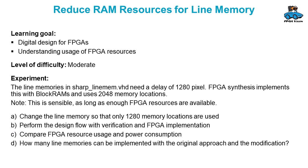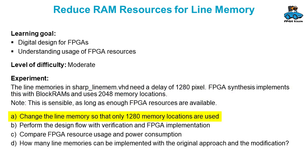An experiment for digital design and understanding of the FPGA resources is having a look at the line memories. The line memories need a delay of 1280 pixels, and the FPGA uses block RAM with 2048 memory locations for it. If there are enough FPGA resources available this is okay, but you can change the line memory so that only 1280 memory locations are used.